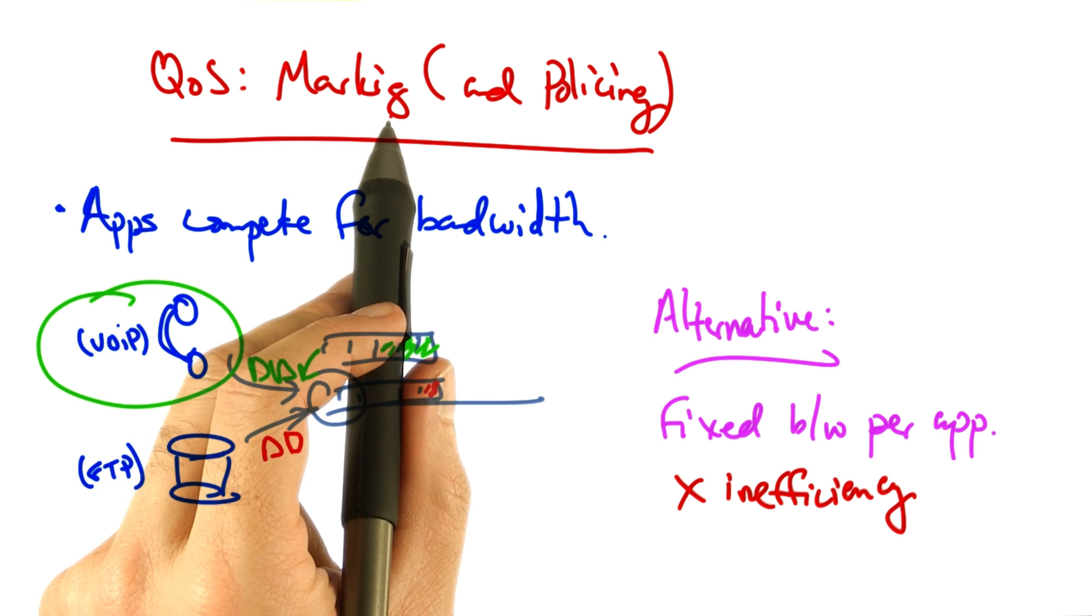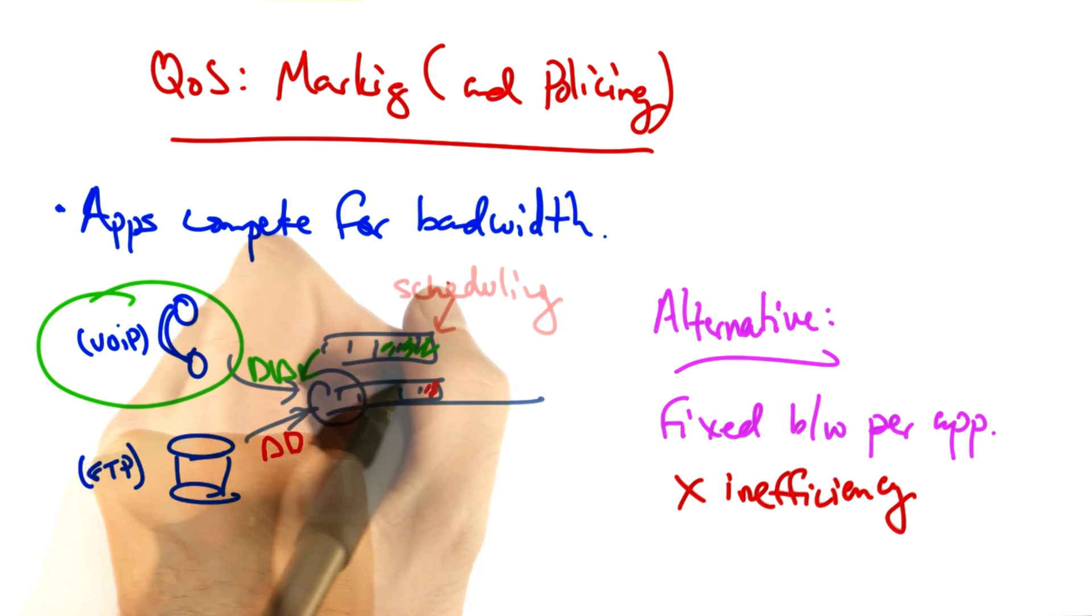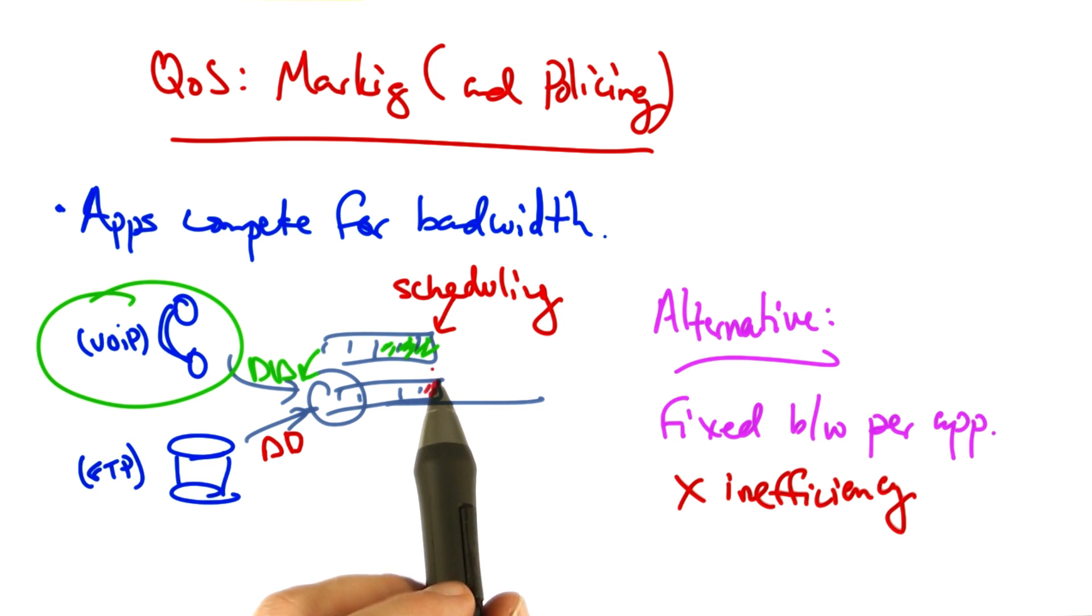So the idea, in addition to marking and policing, is to apply scheduling. One way of applying scheduling is to use what's called weighted fair queuing, whereby the queue with the green packets is served more often than the queue with the red packets.